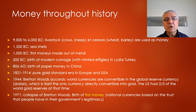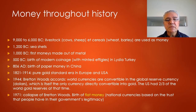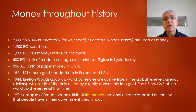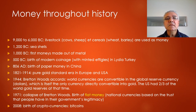Then we have the pure gold standard era from 1821 to 1914. Bretton Woods launched the gold exchange standard in which the dollar becomes the dominating currency. And in 1971, the collapse of Bretton Woods led to the modern monetary system with national currencies being fiat currencies, meaning their value derives from the trust people have in the governments issuing the money. And then 2008 saw the birth of cryptocurrencies with Bitcoin.